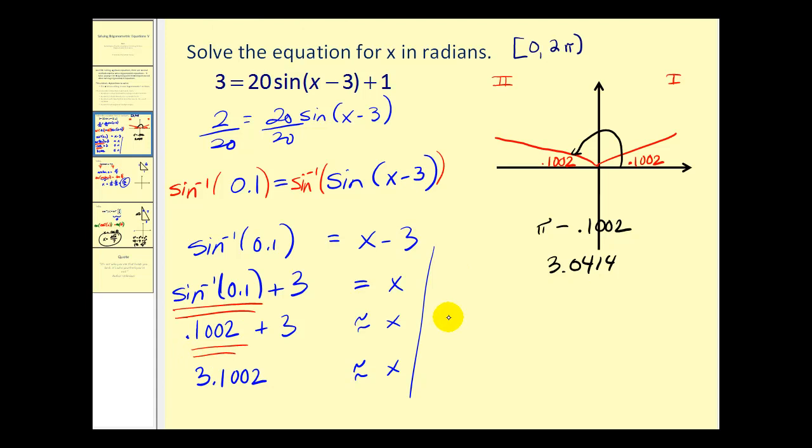So there will be a second possible value for x. Instead of using this angle, we can use 3.0414 plus 3 is approximately equal to x.